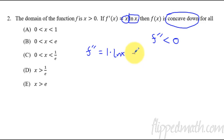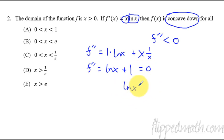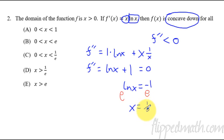The second derivative equals: derivative of the first (which is 1) times the second left alone, plus the first left alone times the derivative of the second (which is 1 over x). So the second derivative equals natural log of x plus 1 — since x times one over x simplifies to 1. Set this equal to zero: natural log of x equals negative one, so x equals e to the negative one, which is 1 over e.